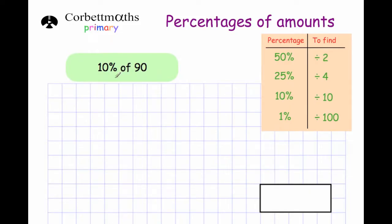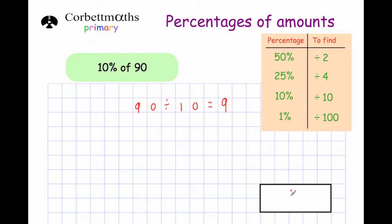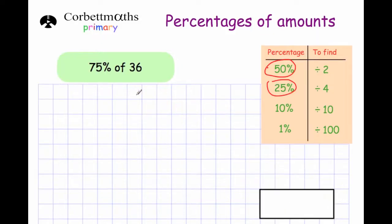Our next question says: work out 10% of 90. To get 10% of a number you divide by 10, so 90 divided by 10 is 9 — our answer is 9.